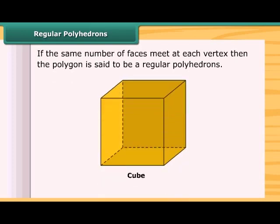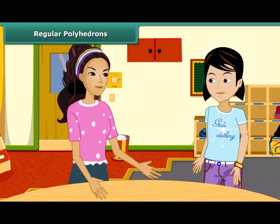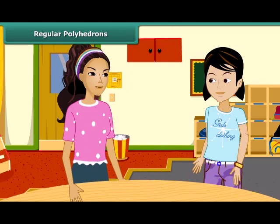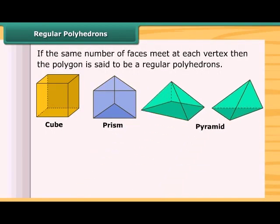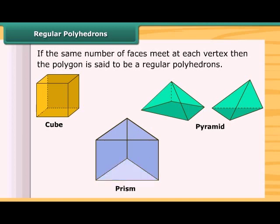A cube is a regular polyhedron because here three faces meet at each vertex. We have two important members of the polyhedron family: prisms and pyramids. A prism is a polyhedron whose base and top are congruent polygons and whose lateral faces are parallelograms. A pyramid is a polyhedron whose base is a polygon of any number of sides and whose lateral faces are triangles with a common vertex.